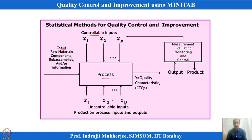Noise variables may impact the process but cannot be controlled. For example, supplier-to-supplier variation is a noise — I cannot rely on one supplier and need various suppliers, so that influences the outcome but I cannot do anything about it. There can also be innumerable unknown variables that influence the process. These are called uncontrollable noise variables, represented as Z variables.